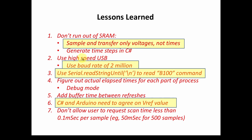We also talked in the second video about using a high-speed USB, and we decided to use a baud rate of 2 million — we showed you how to do that. We also talked about using serial.readStringUntil and giving it a terminator when reading the B100 request from the computer. Otherwise, it can spend a second or so timing out and slow down the entire process. So we're going to make sure we use readStringUntil when waiting for the B100 command. The other thing is the VREF.